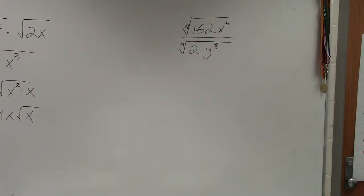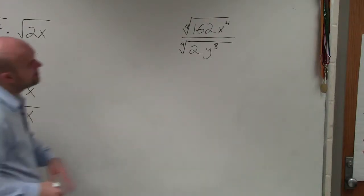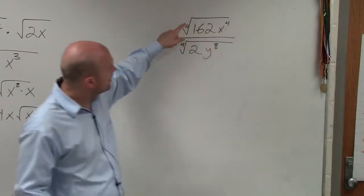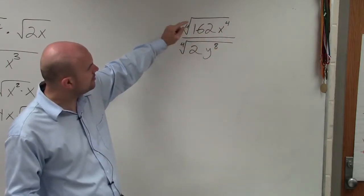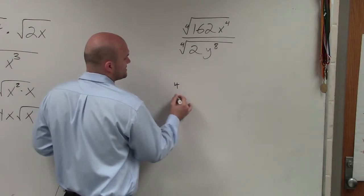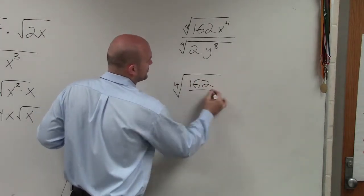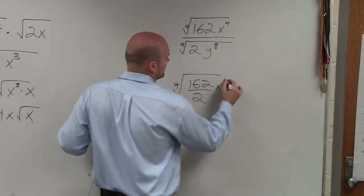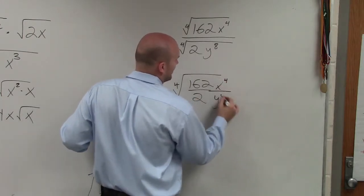All right. In the next example, in this case, ladies and gentlemen, what we have here is we can just simply rewrite this as 162 over 2, x to the fourth over y to the eighth.